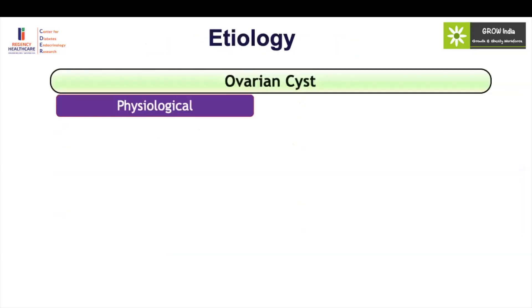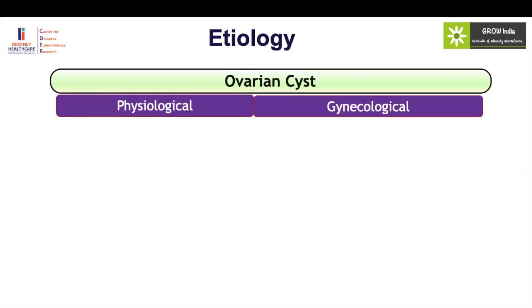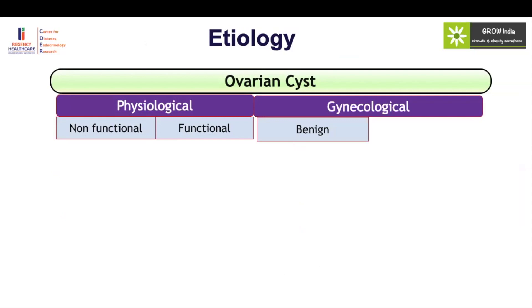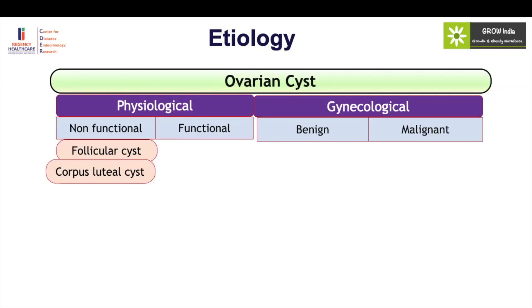Looking at the etiology of ovarian cysts, almost half are physiological and others are gynecological. Most physiological ones are non-functional — they happen due to anovulation when the follicle has not ruptured, leading to formation of ovarian cysts that are not producing any hormones. Gynecological cysts could be benign or malignant. Non-functional cysts, or corpus luteal cysts with bleeding, are visible on ultrasound. They are completely asymptomatic, present with one episode of bleeding or an irregular period, and usually resolve in a couple of months. Their size is generally less than five centimetres.